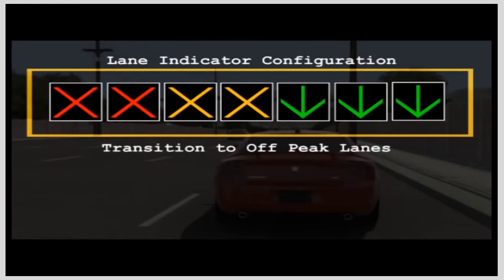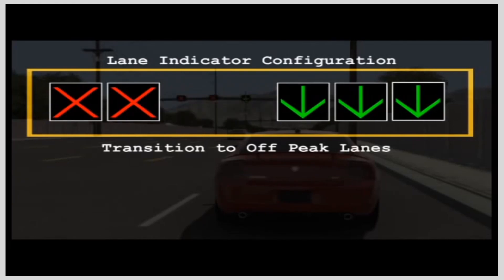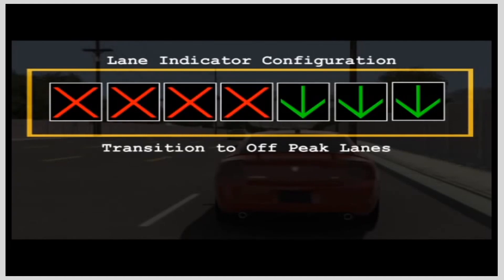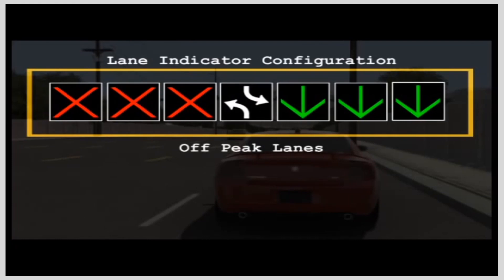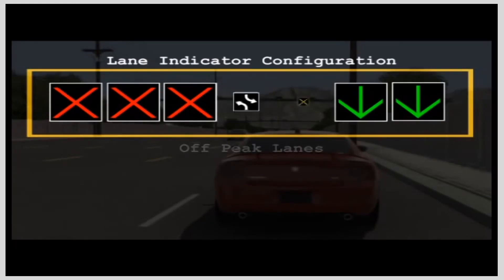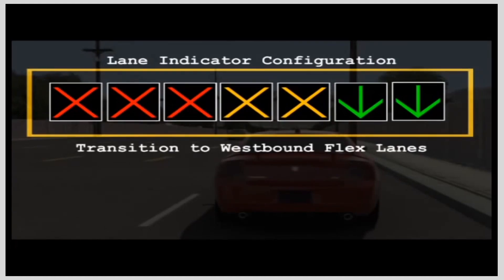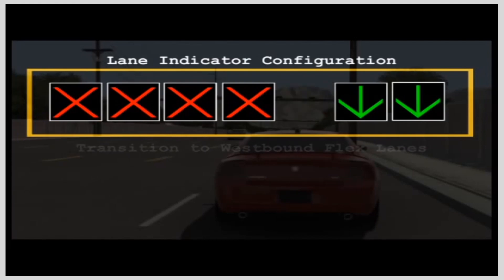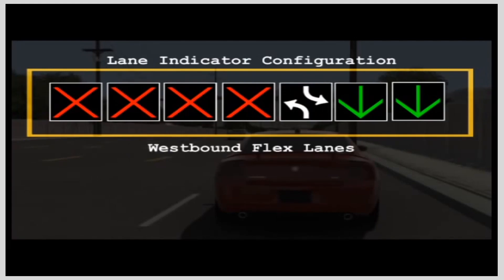The next configuration shows the transition back to off-peak lanes. The yellow X's indicate lanes in transition and motorists need to merge right, with about a minute to complete the transition. We're then back to the off-peak configuration. Next, a motorist traveling eastbound during the evening commute, when most traffic is headed westbound, will see yellow X's indicating lanes in transition requiring a merge right, followed by the flex lane configuration for the evening commute.